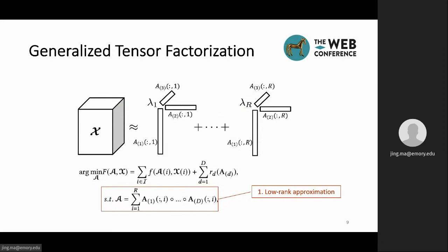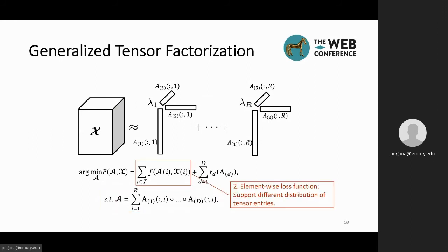The generalization of tensor factorization is an extension to the objective function from three perspectives. First is that we support the low-rank approximation of the original tensors. Second is that we use an element-wise loss function to support different distributions of the tensor entries. For example, when a tensor has binary data, we can use Bernoulli-logit loss to model it, while if a tensor has count data, we will use the Poisson loss instead.